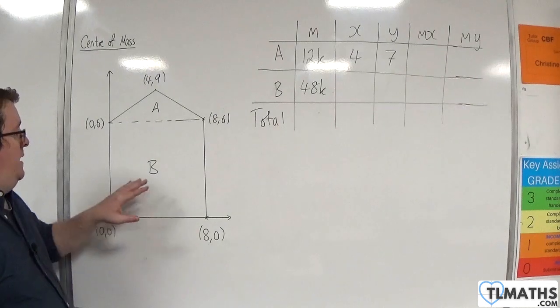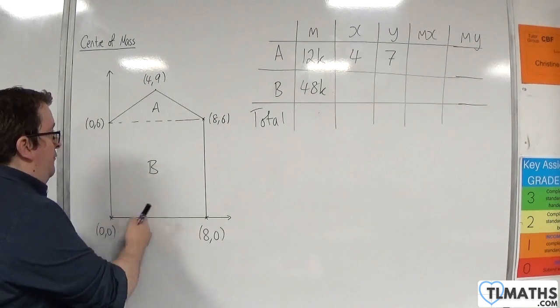Then, for B, we're going to have central mass at 4, 3.